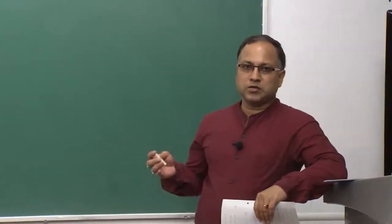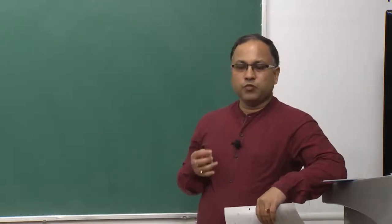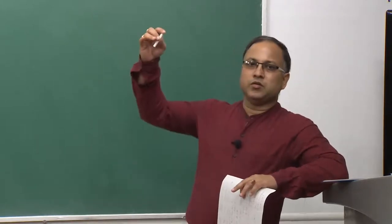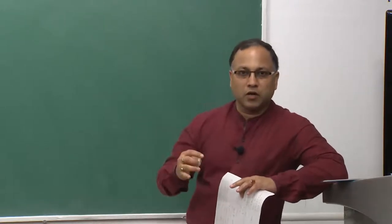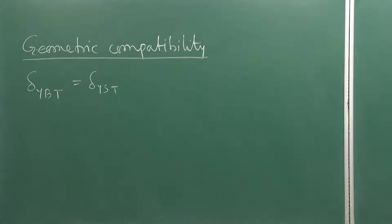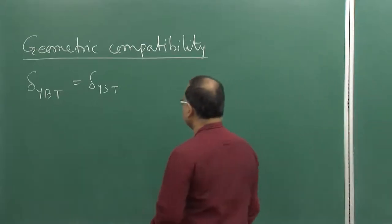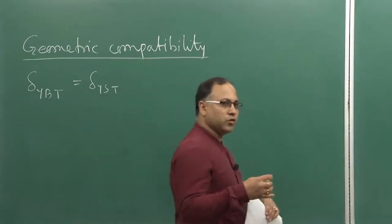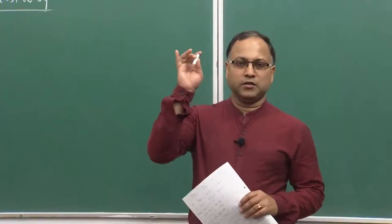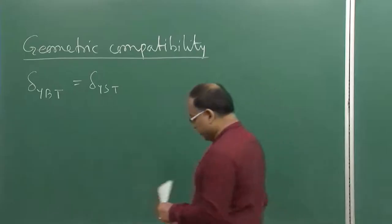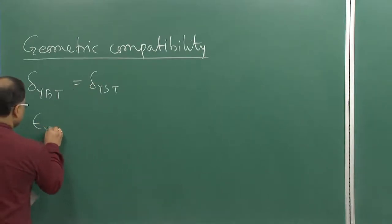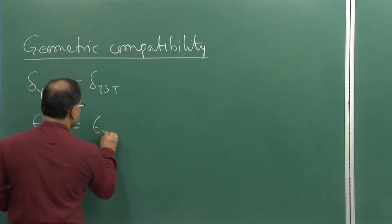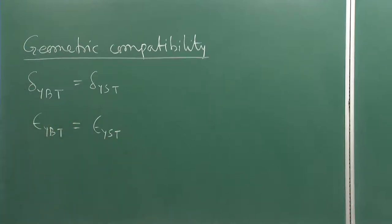Therefore, both the bolt and the sleeve will be elongating or contracting by the same amount — the whole assembly will be enlarged or contracted together. This is the geometric compatibility for the system under temperature rise. Because the length of the sleeve and the length of the bolt are both the same, the thermal strain in the bolt must equal the thermal strain in the sleeve.